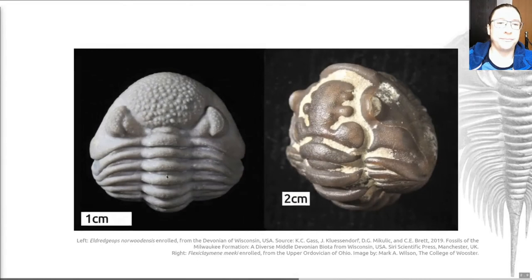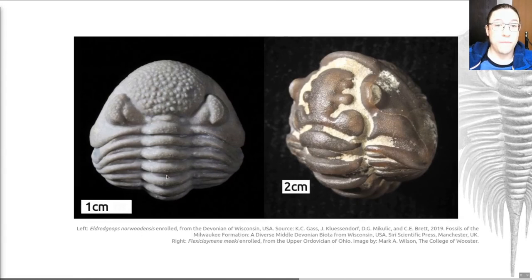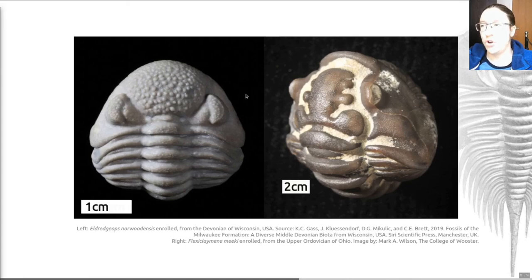Thanks to this articulation of the thorax, trilobites can enroll. You can see two examples in this image of enrolled trilobites. They take their head and their tail and roll up to form a ball a bit like a pill bug. They did this during times of stress to avoid unpleasant environmental conditions or as a defensive adaptation. We think that most Cambrian trilobites probably had a limited ability to roll up, but several groups evolved fairly sophisticated structures that enhanced this behavior, which first appear in the Ordovician.